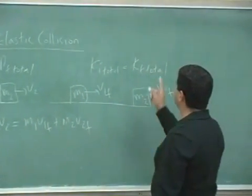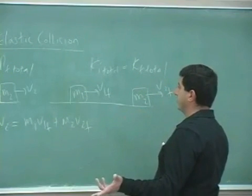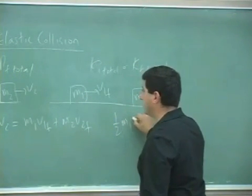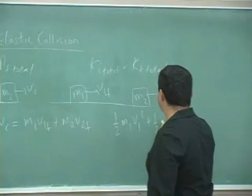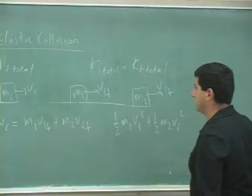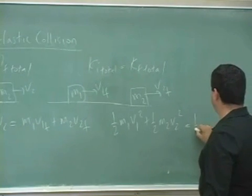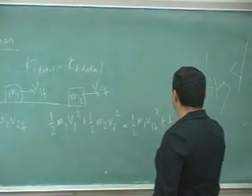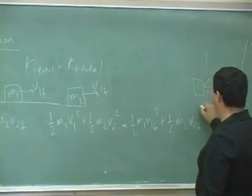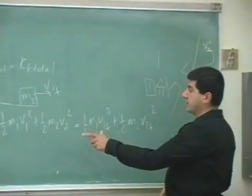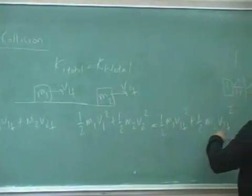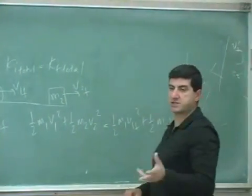And then for the kinetic energy, you basically add up their kinetic energies. Half M1, V1 squared plus half M2, V2 squared is equal to half M1, V1 final squared plus half M2, V2 final squared. So in this case, the total kinetic energy of the system before the collision equals to the total kinetic energy of the system after the collision.